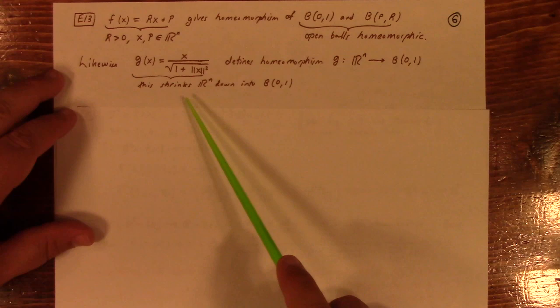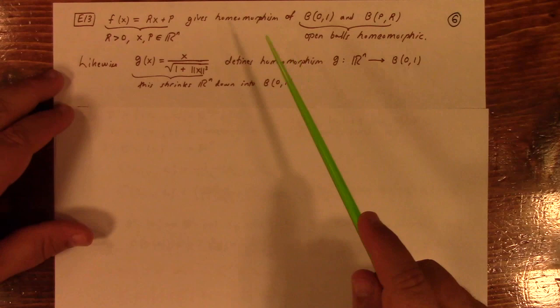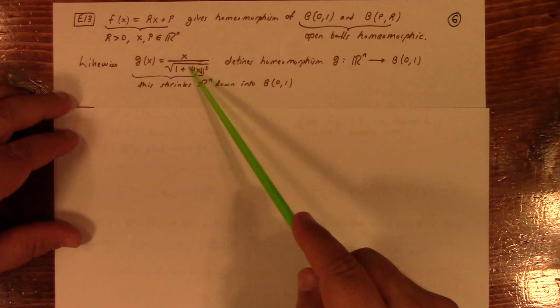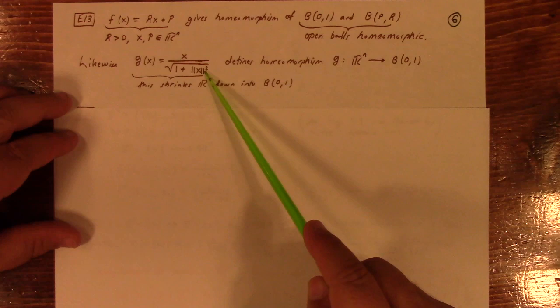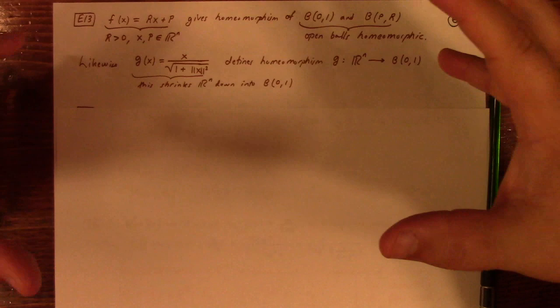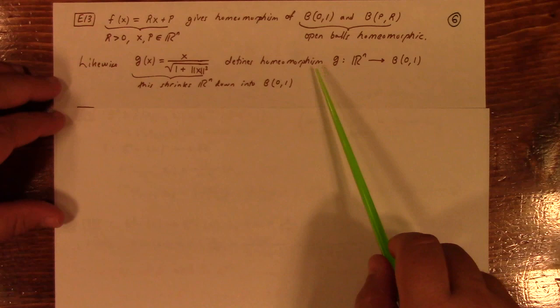And you can also define a homeomorphism from R^n to the unit ball like this. Basically, this just shrinks R^n down into B01 by keeping it in the same direction, but making it closer to the origin. This makes everything go closer to the origin except for, when you're one distance 1 from the origin, it shrinks you back to distance 1 over root 2 from the origin. This mapping maps 0 to 0. So, it's just basically taking all of R^n and just kind of sucking it down into the unit ball. And that process is reversible and continuous, so it's a homeomorphism.